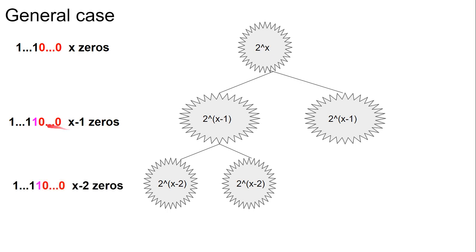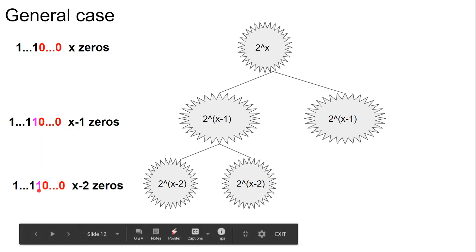And again, a zero will be replaced by a one, and we'll have x-2 zeros. So the size of these networks will be 2^(x-2).